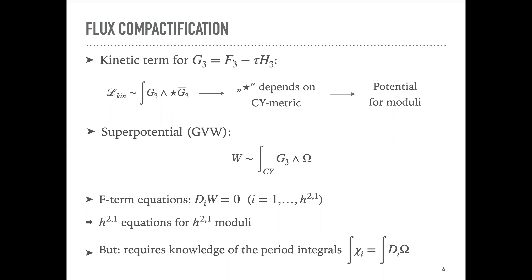More specifically, if I have non-trivial F_3 and H_3 I can combine them into G_3. There is a kinetic term for this, and since the Hodge star depends on the Calabi-Yau metric this generates a potential for the moduli. In terms of N=1 four-dimensional supergravity I can write down a superpotential of the form W = ∫G_3 ∧ Ω, where Ω is the holomorphic three-form. Taking derivatives with respect to the h^{2,1} complex structure moduli gives F-term equations. Counting equations and moduli, I have exactly the same number, so generically this stabilizes all moduli, though evaluating these equations requires knowledge of period integrals, which can be quite difficult.